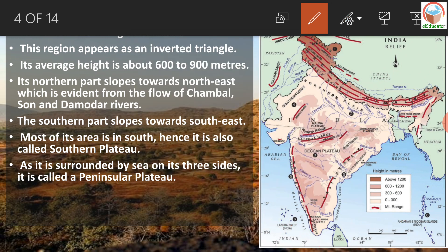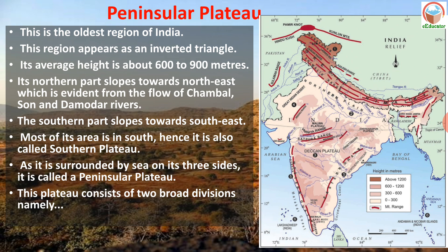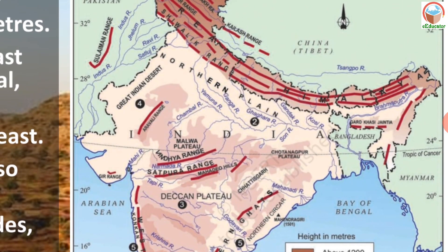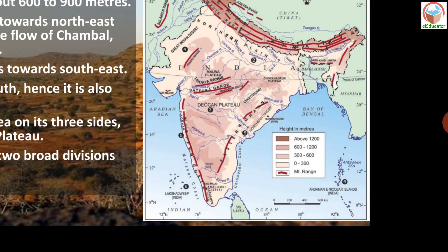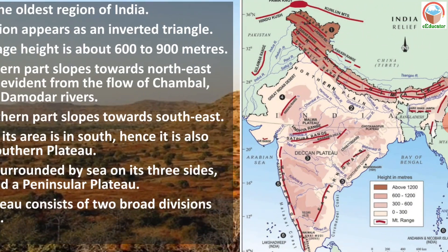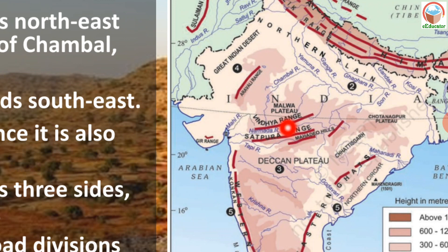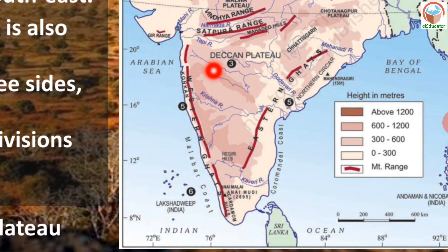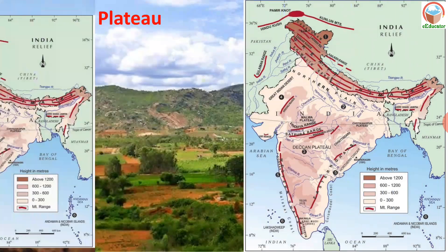The peninsular plateau has two broad divisions: the Malwa Plateau in the north and the Deccan Plateau in the south. The northern area is the Malwa Plateau, and from the Satpura range southward is known as the Deccan Plateau.